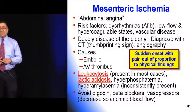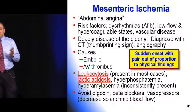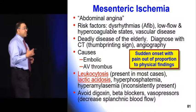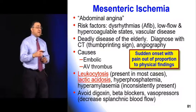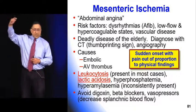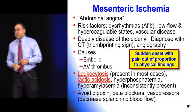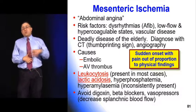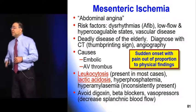Mesenteric ischemia is definitely a big-ticket item on the board exam. Any elderly patient showing up with abdominal pain — put mesenteric ischemia right up there with AAA at the top of your differential. The classic presentation is pain out of proportion to physical findings: the patient is rocking back and forth, miserable, and yet you push on their belly and it's really not that tender.